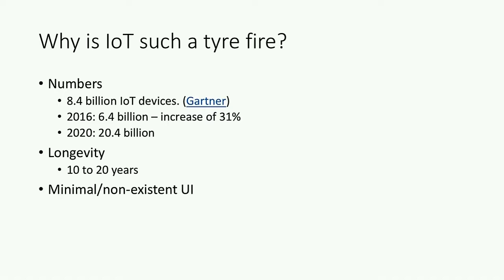Embedded devices by definition have minimal or non-existent UI. Some IoT definitions include electronic cars, which often have a big UI, but then you've got something like a light bulb with nothing at all. It's harder to interact with the user without them making that decision. And finally — shit security. The security on these things is terrible.